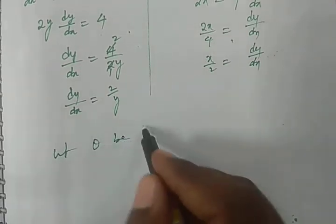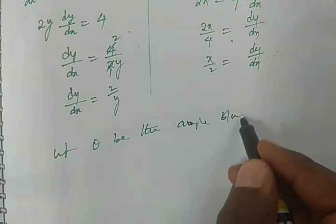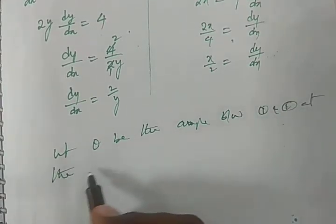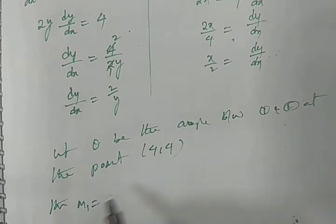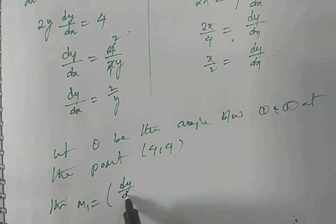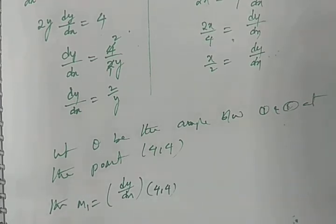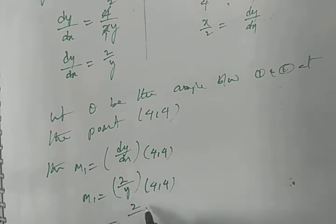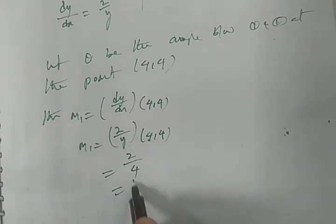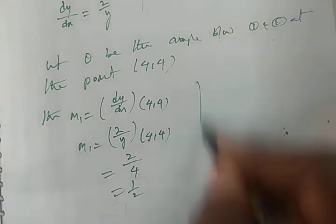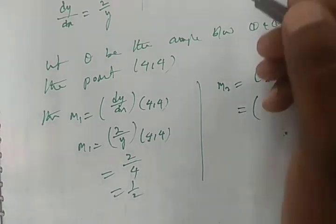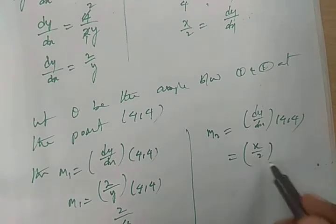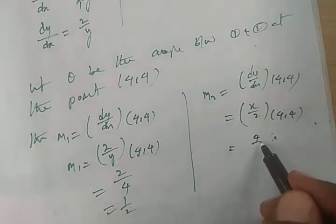Let θ be the angle between curves 1 and 2 at the point (4, 4). The slope of the tangent of the first curve: m₁ = dy/dx at (4,4) = 2/y = 2/4 = 1/2. The slope of the tangent of the second curve: m₂ = dy/dx at (4,4) = x/2 = 4/2 = 2.